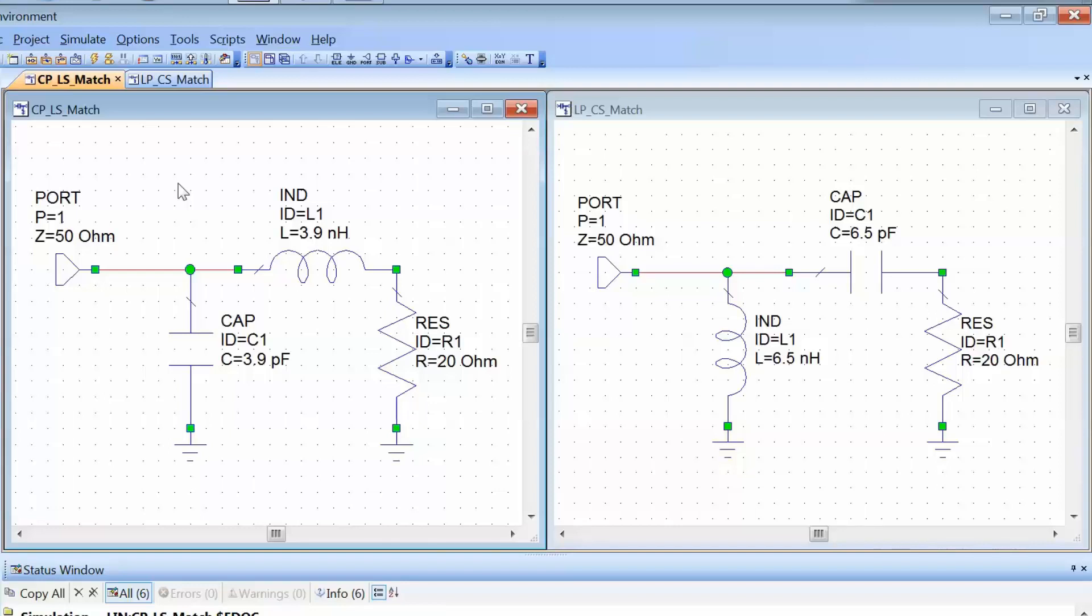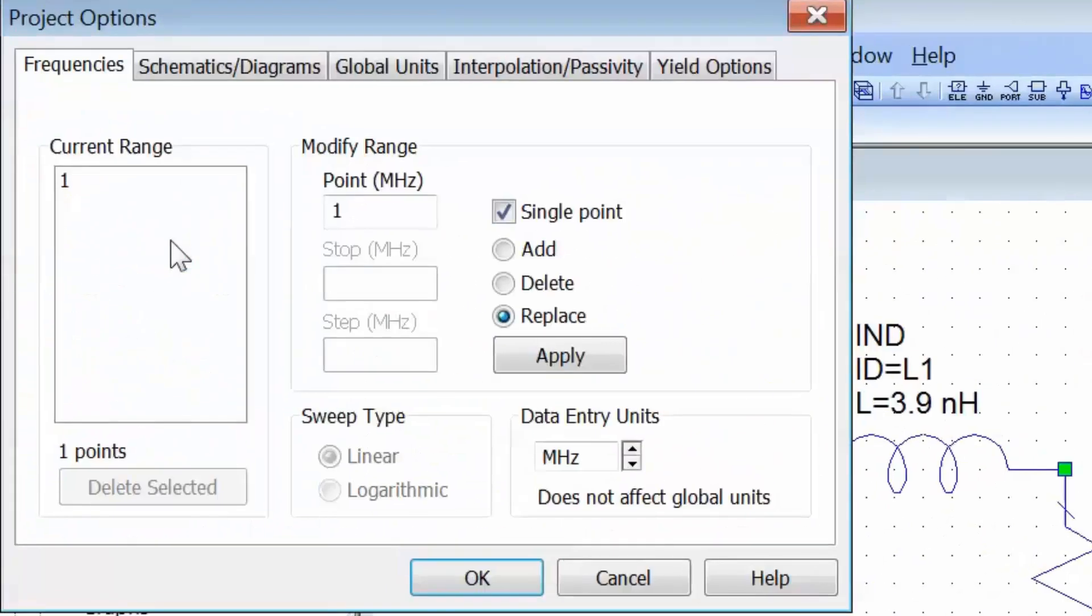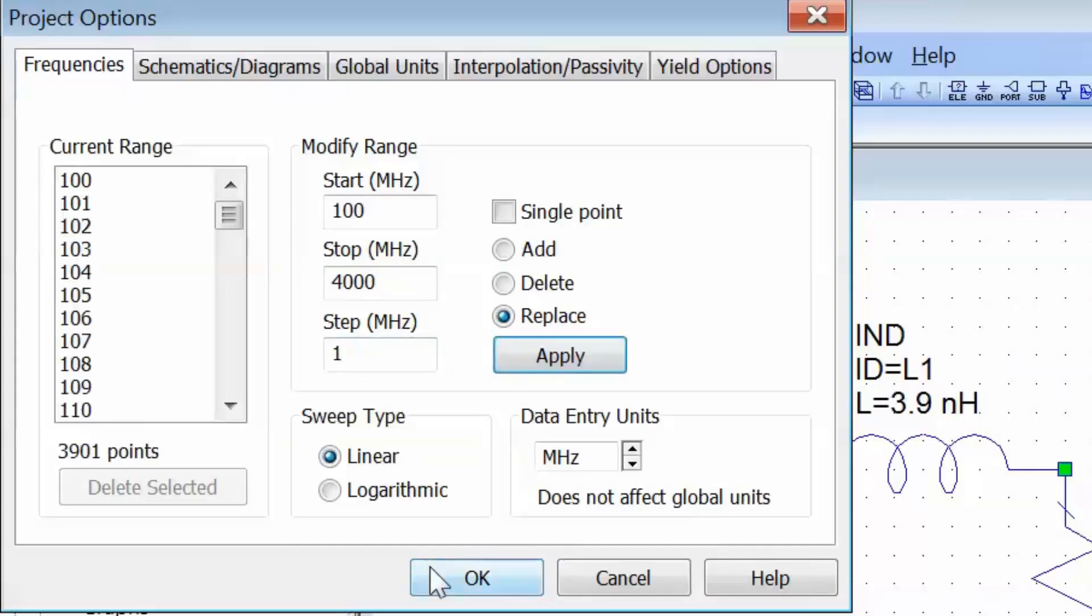The first measurement, the S11, is quite straightforward. All we have to do is set up a frequency range over which we can sweep our frequency so we can see how good a match we get across a broader frequency range. To do this, let's go to project options and untick the single point box. Then we'll choose a start frequency of 100 MHz, a stop frequency of 4000 MHz, and a step of 1 MHz. Click on apply and then ok.